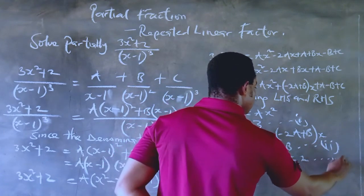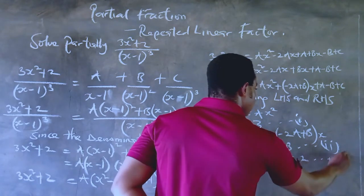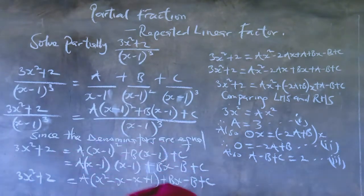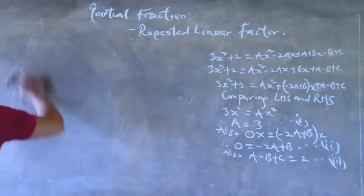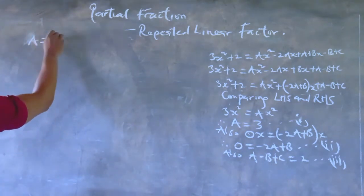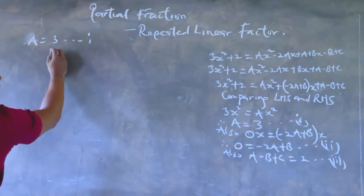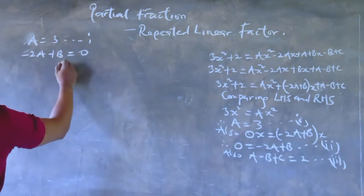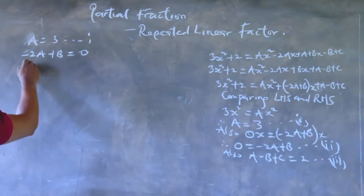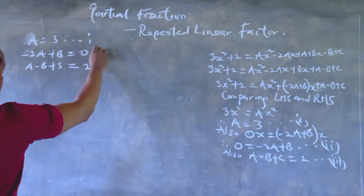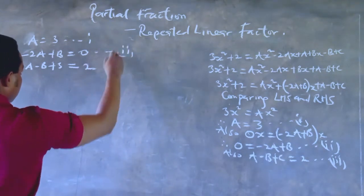We have A minus B plus C equals 2. So call this equation 1, this equation 2, and this equation 3. So we have simultaneous equations like this to solve. Make sure you use all three equations reasonably, use them properly, or else you could end up getting a wrong answer. So we have A equals 3, right?